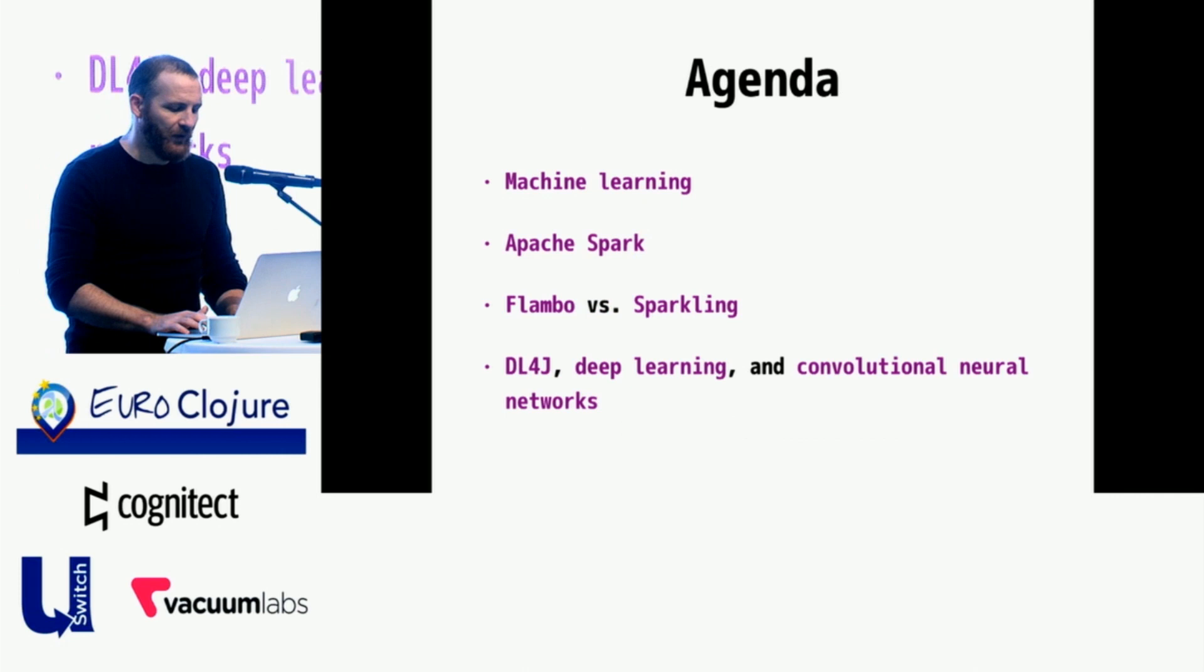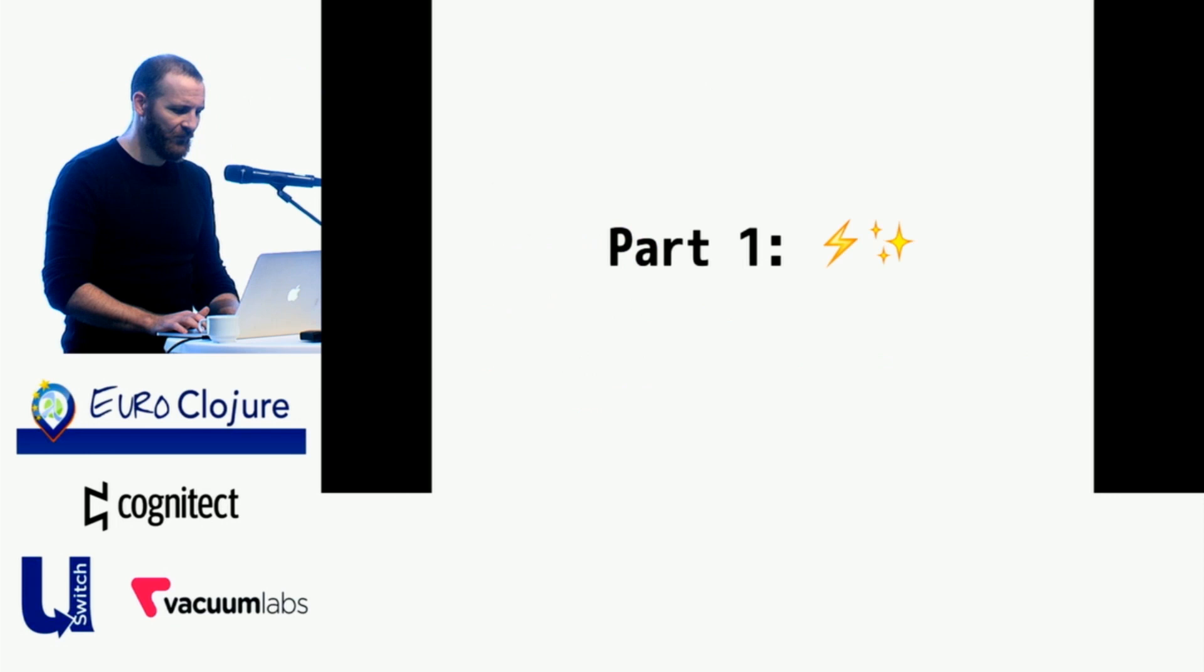This is not a long talk, but I think we still benefit from knowing where we're going. We'll talk briefly about machine learning in general, supervised learning in particular, decision trees and neural networks. We'll be using Apache Spark for the decision tree, talking about two DSLs for Spark: Flambo and Sparkling. Then we'll transition to neural networks, deep neural networks, convolutional neural networks, and the DL4J library. Is this speed okay so far? Good? Awesome.